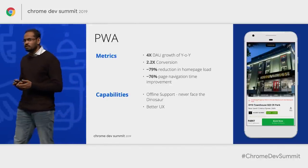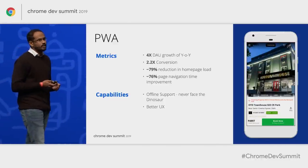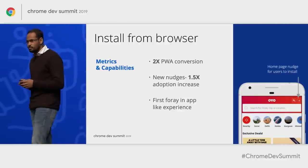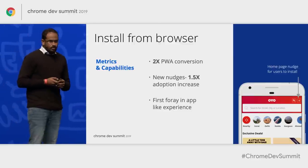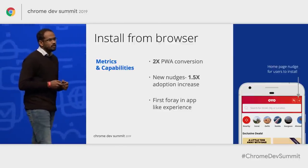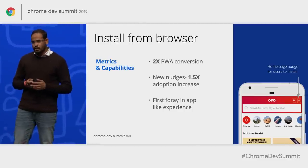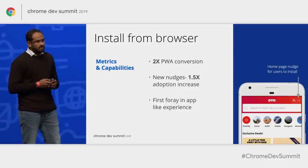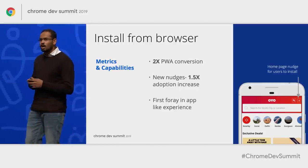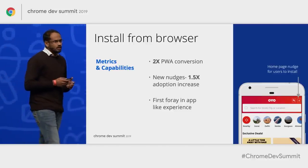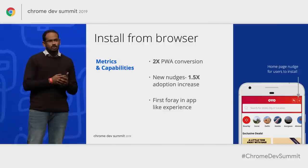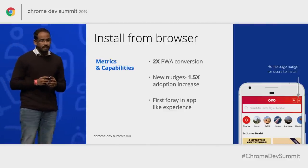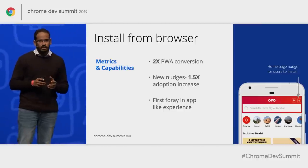With an already optimized product in hand, we were looking to make it more accessible to end users — this is where the capability of browser installs came into the picture. From browser installs, users were already converting at around 2x compared to PWA. Having these metrics, we were looking to increase adoption. We started doing a lot of A/B experiments around nudges across user journeys — making nudges on home pages and post-booking pages — and saw adoption increase of around 1.5x without any drop in PWA conversion.